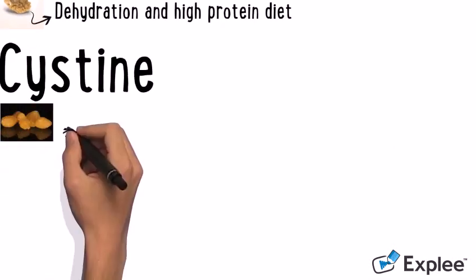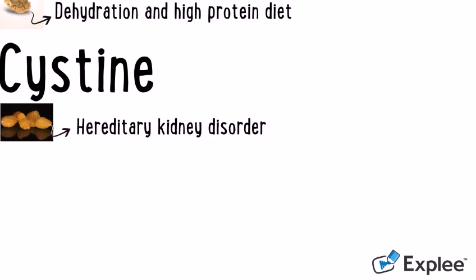Cysteine stones are formed when people have a hereditary disorder called cystinuria, which causes the kidneys to release too much cysteine into the urine.